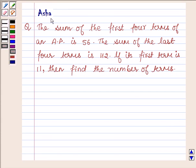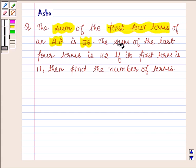Hi, this is Asha explaining this portion of your book which says the sum of first four terms of an AP is 56. The sum of last four terms is 112. If the first term is 11, find the number of terms.